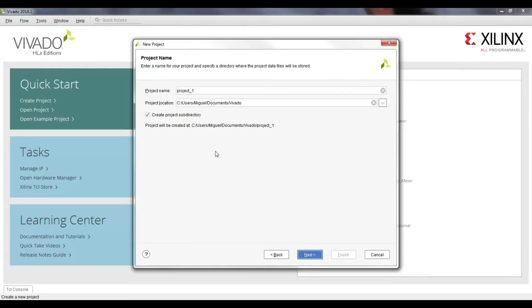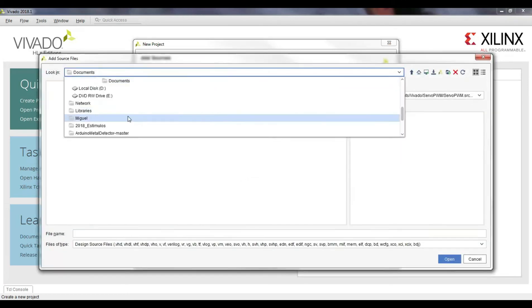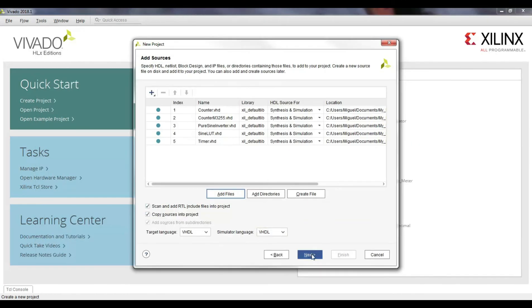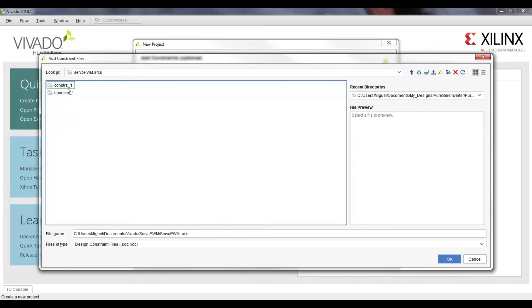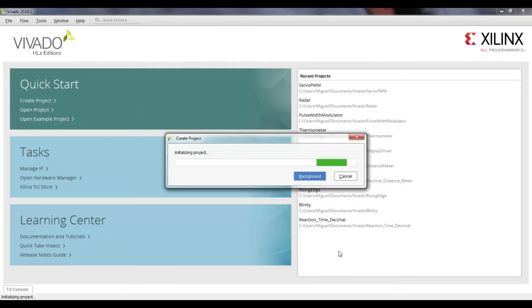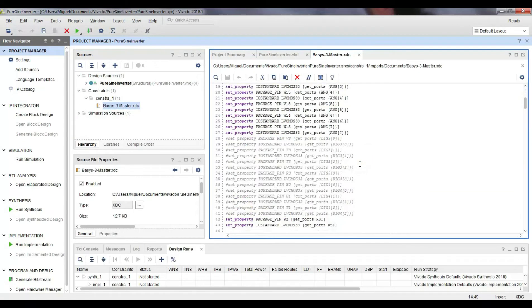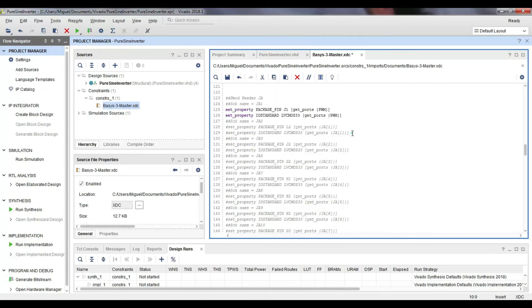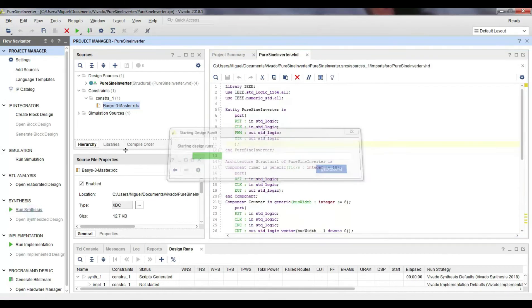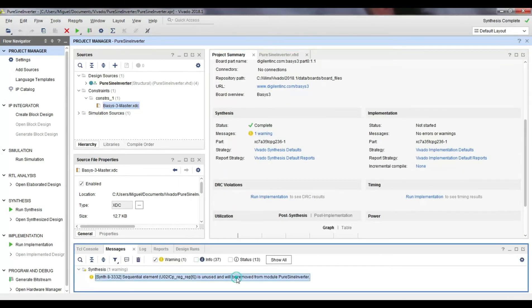Now, I create a new project in Vivado to implement the circuit designed with a Xilinx Artix-7 FPGA, which is included in the DigiLink Nexys board. I include all the VHDL source files, and also, I download the XDC constraints file. This file is used to define the connections between the top-level signals and the FPGA pins.